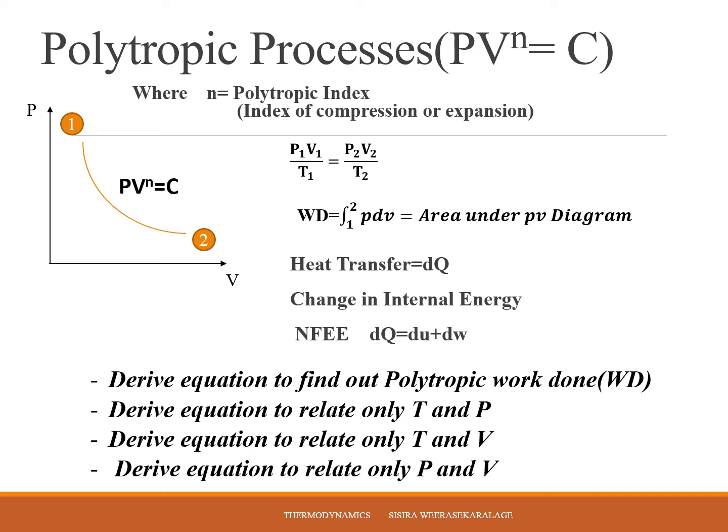That law, the polytropic process is governed by law PV to the power N equals constant. What is N? N is index of compression or expansion, or polytropic index. You have to remember N as polytropic index of this particular process because if it is compressing towards the volume decreasing side it is compression. If it is other way around towards the increasing volume side then that is an expansion. You have both compression as well as expansion from state 1 to 2 and 2 to 1. 2 to 1 is compression, 1 to 2 is an expansion.